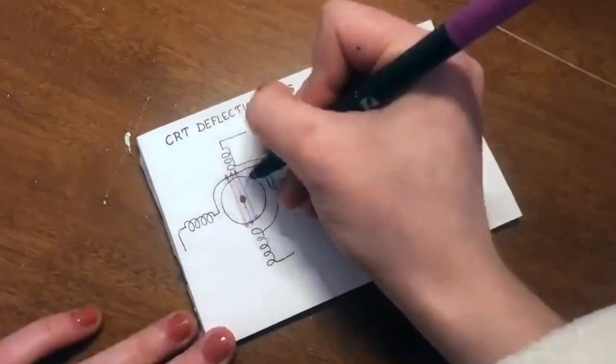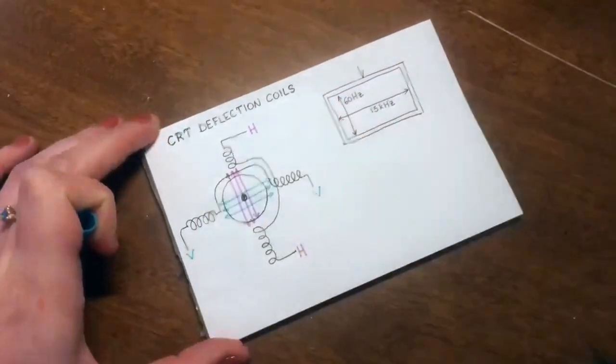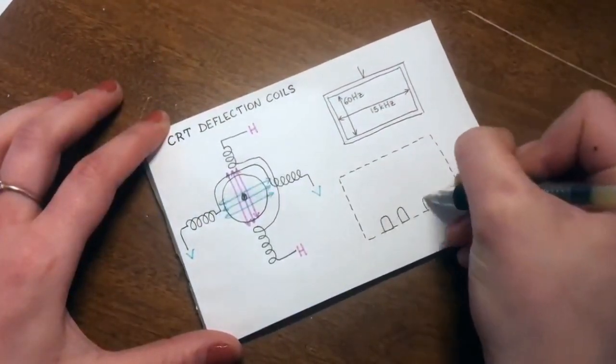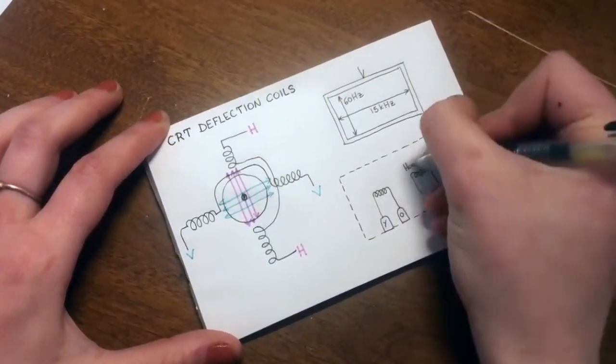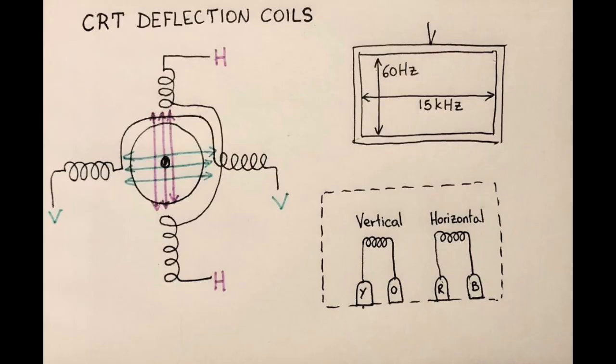They're simply Helmholtz coils, that is copper windings. They create magnetic fields inside the tube. Electrons will move at a right angle to the magnetic field lines.